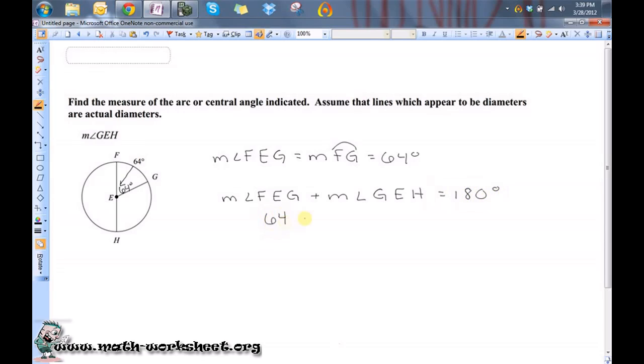So I just need to subtract 64 from both sides, so that'll give me the measure of angle GEH is equal to 116 degrees.